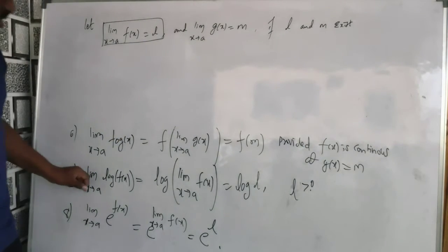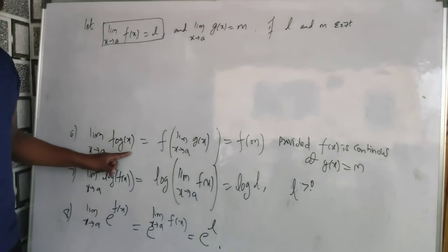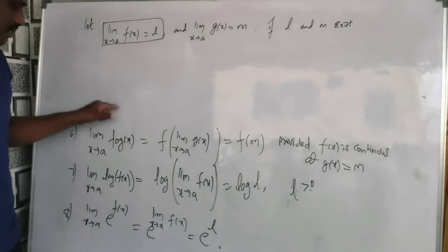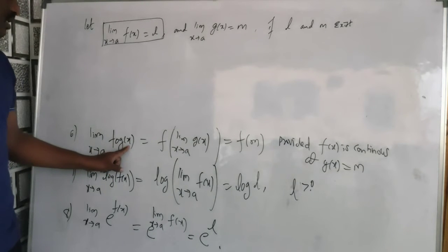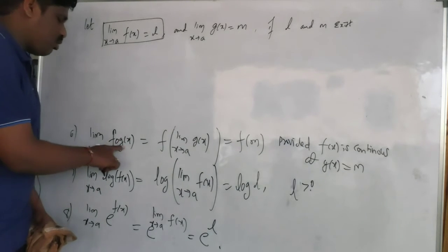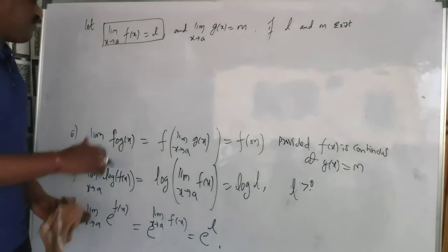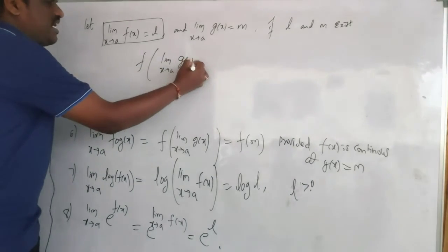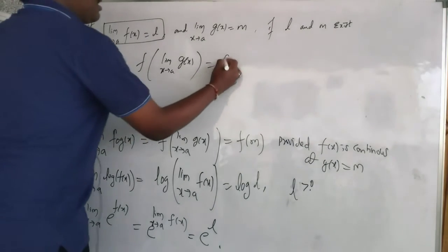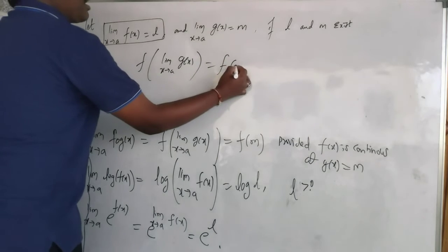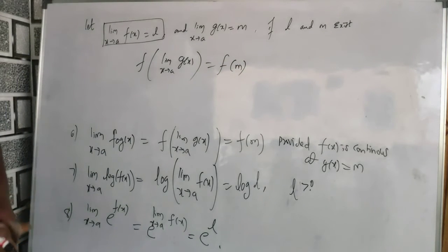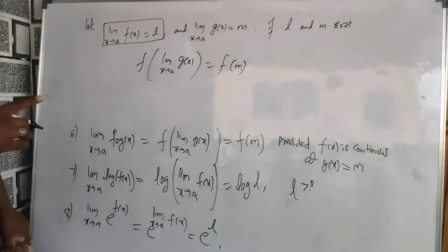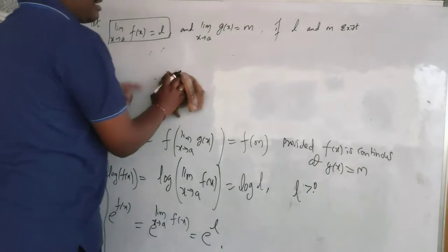The sixth property: limit extending to a of f∘g(x), i.e., f composed with g(x). The limit goes to the inner g function, not the f function. So I can write it as f of limit extending to a of g(x), which equals f(m), since limit extending to a of g(x) is m. This is provided f(x) is a continuous function at g(x) = m.